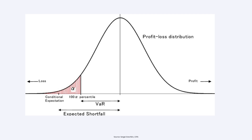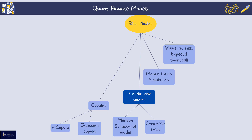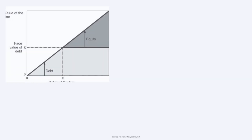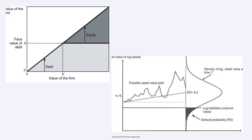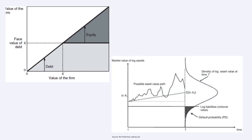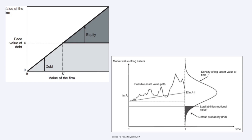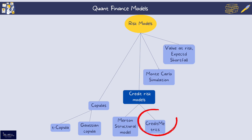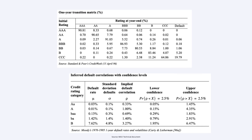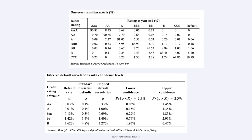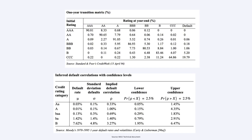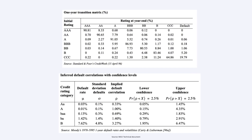Now for credit risk models. The Merton Structural Model models a firm's equity as a call option on its assets, with default occurring if the asset value falls below the debt value at maturity — foundational in structural credit risk modeling. CreditMetrics is a portfolio credit risk model developed by JP Morgan that estimates the distribution of potential losses due to credit events, considering rating migrations and default correlations. Copula models like the Gaussian copula and t-copula describe the dependence structure between random variables.